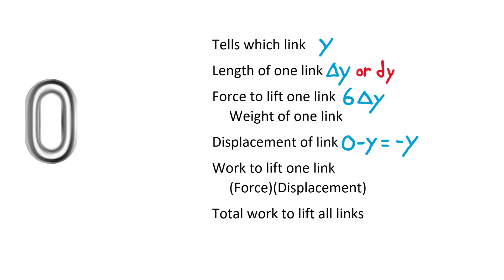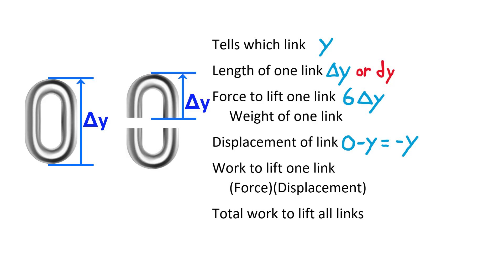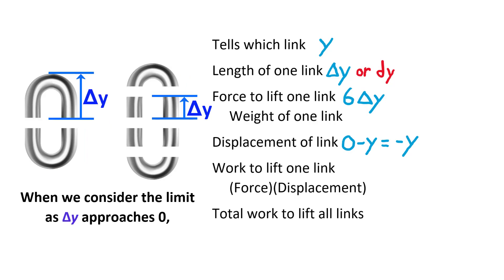At this point, I want to consider that an actual chain link has a finite length, so the top of the link is higher up and does not have as far to move as the bottom of the link. One link of the chain was a useful mental model for a small piece of chain, but we need to consider even smaller pieces so that the size of each piece approaches zero. That way, the top of a piece and the bottom of the same piece will not move different distances. When we consider the length of one small bit of chain to approach zero, we use dy instead of delta y.